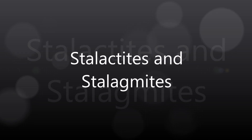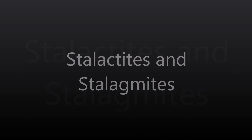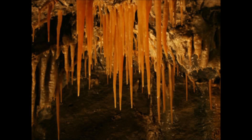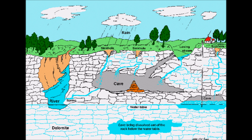Stalactites and stalagmites are mineral formations frequently found in caves. A stalactite is an icicle-shaped mass of accumulated calcium carbonate hanging from the roof or sides of a limestone cavern. It is formed by mineral precipitation from ground water that has seeped very slowly through the roof of the cavern.